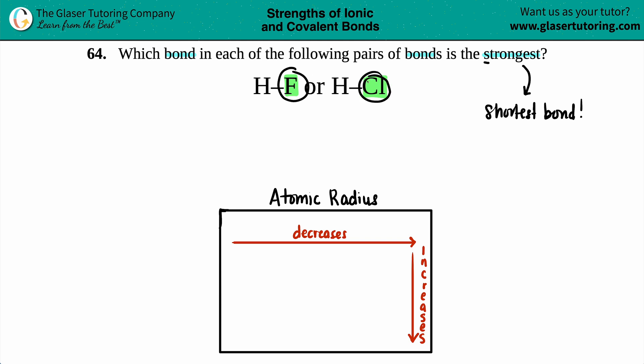Relatively speaking, F would be somewhere in this corner and Cl would be right below it. They're both halogens, and as we're going down we're increasing in that radius, which means that the atom is getting larger.